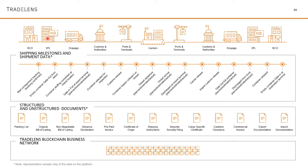The current problems with global trade include: data trapped in organizational silos; manual, time-consuming, paper-based processes; and clearance delays often subject to fraud. For example, without customs clearance, goods cannot be loaded onto carriers — the container may sit at the port until authorities clear it. All this contributes to overall delivery delay and increased cost in the end-to-end supply chain process.